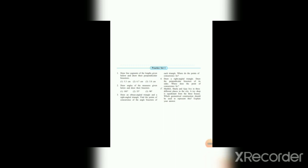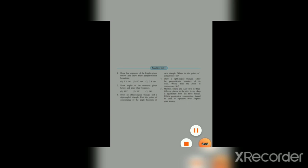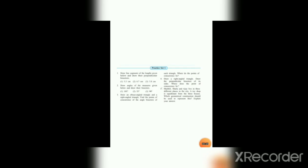Equation No. 1, the equation is: draw a line segment of the length given below and draw their perpendicular bisector. This means today we will see how to bisect a segment or how to draw a perpendicular bisector.